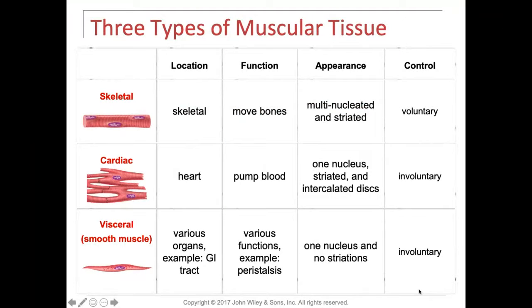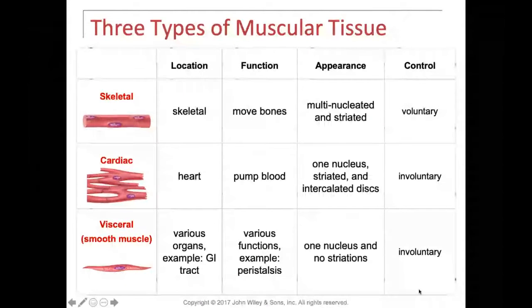To review, we've already covered a little bit of this when we covered the lecture on tissues. Remember the four types? There was epithelial tissue, connective tissue, muscle tissue, and neurons. When we look at muscular tissue, there were skeletal, cardiac, and smooth muscle. Both skeletal and cardiac are considered striated. Only skeletal is voluntary, while both cardiac and visceral — also known as smooth muscle — are involuntary.